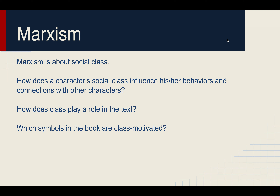Reading through a Marxist lens means asking: is there commentary on class? Does class become important inside of the text? You can ask this question of any book — of Mice and Men, or even Bardo, where class actually played a role. That's how we look at things through a Marxist lens.